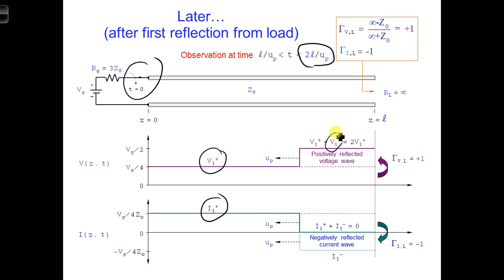We can calculate the voltage reflection coefficient at the load, which you can see here on the other right of the screen. V1 plus times the voltage reflection coefficient at the load is equal to V1 plus times positive 1, which is just V1 plus.